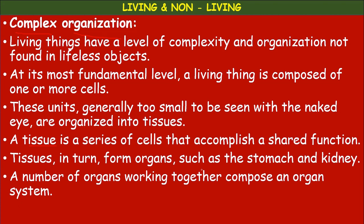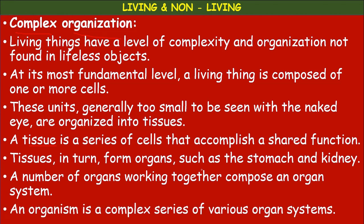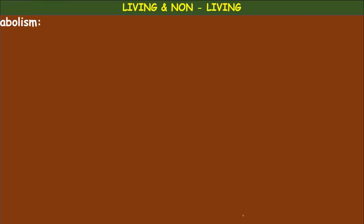There are different organ systems present in the body. An organism is a complex series of various organ systems. That is why in living organisms, organization is a complex process. So: cells combine to form tissues, tissues combine to form organs, organs combine to form organ systems, and organ systems combine to form an organism.